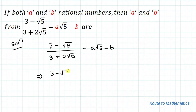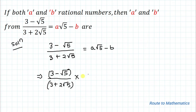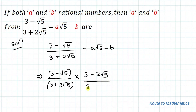So we have (3 minus root 5) divided by (3 plus 2 root 5). We will rationalize it by multiplying with the conjugate. Whatever terms are present in the denominator — 3 and 2 root 5 — since there is a positive sign, I will place a negative sign. So we multiply by (3 minus 2 root 5) over (3 minus 2 root 5). This process is called the rationalization process.